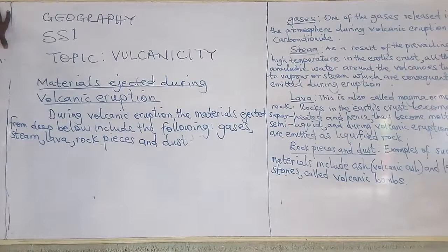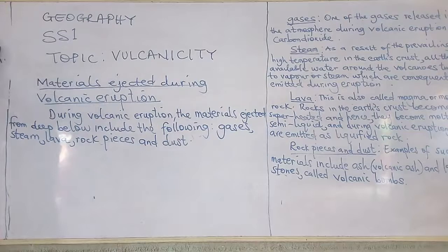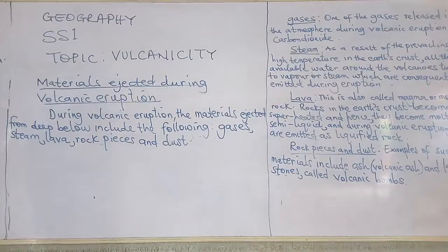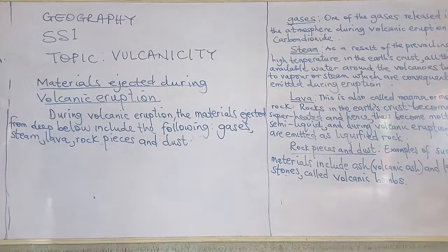Many materials are thrown up by the volcano during volcanic eruptions. The materials ejected from deep below, from the interior of the earth, include: gases, steam, lava, rock pieces, and dust.